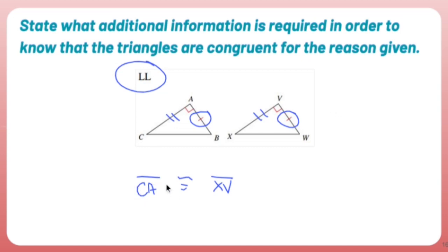I did CA for cough and XV for... but now I've proven that these two triangles are congruent. There you go.